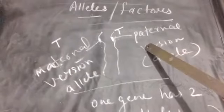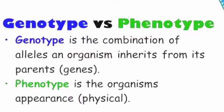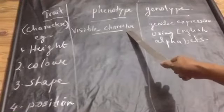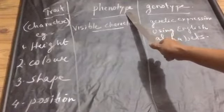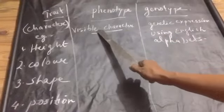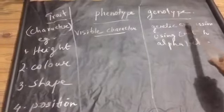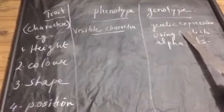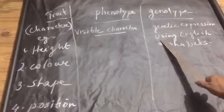Thus we understand one gene has two alleles — paternal and maternal — and a pair of alleles or factors is needed to bring out a character or a trait. Now look at two terms: phenotype and genotype. You have to understand these two terms before we start Mendel's experiment. For a trait or a character, the visible or expressive form is known as phenotype, the physical appearance of a character. Whereas genotype is the genetic expression — how the alleles or factors are present to bring the expression of a character, expressed using English alphabets.